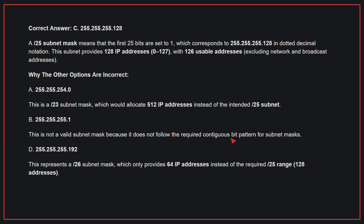While the other options are incorrect: A, 255.255.254.0. This is a /23 subnet mask, which would allocate 512 IP addresses instead of the intended /25 subnet. B, 255.255.255.1. This is not a valid subnet mask because it does not follow the required contiguous bit pattern for subnet masks. D, 255.255.255.192. This represents a /26 subnet mask, which only provides 64 IP addresses instead of the required /25 range. Therefore, the correct answer is C: 255.255.255.128.